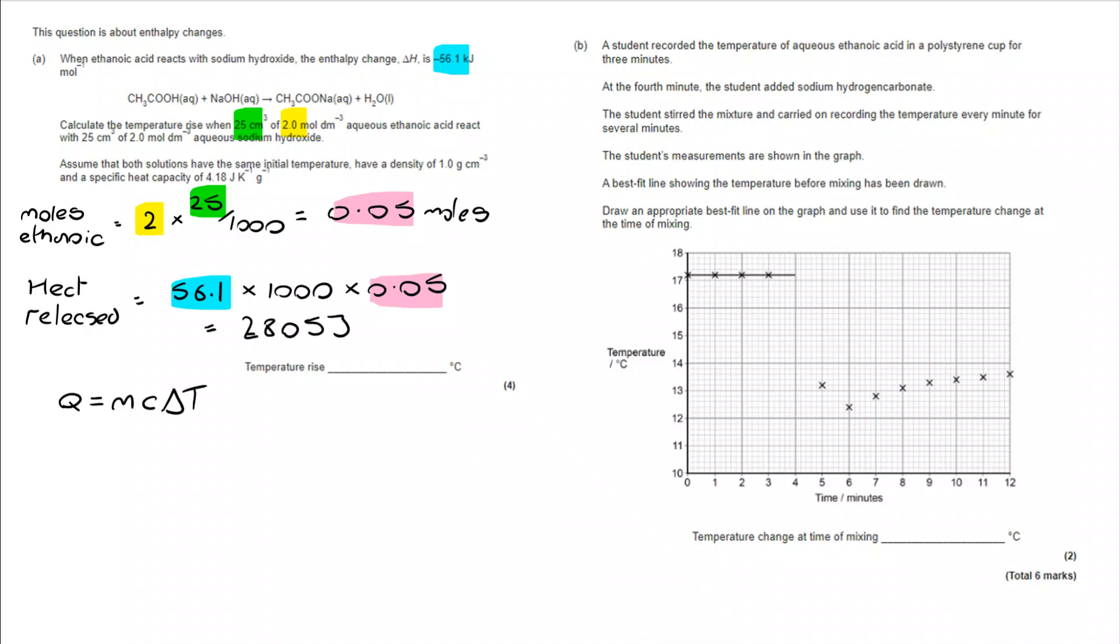So, I've now got a Q value. Q is MC delta T. I'm not actually calculating Q. I've already got it. I'm calculating delta T. So, I rearrange it. Delta T is Q divided by M multiplied by C.